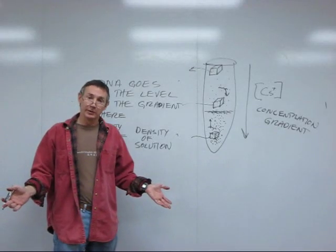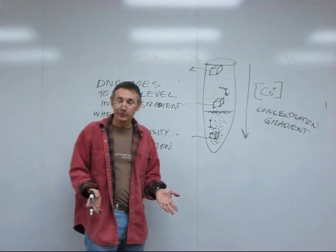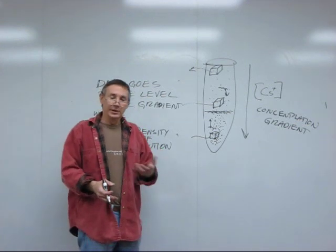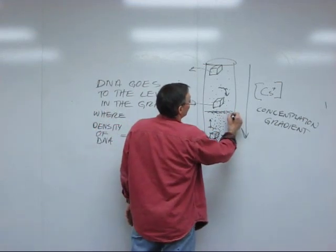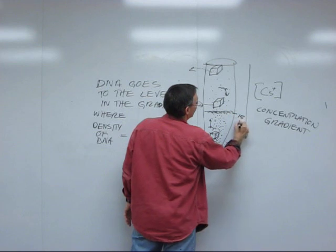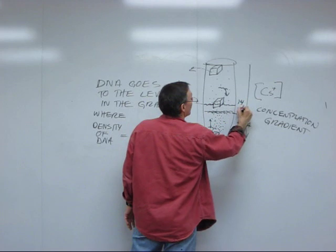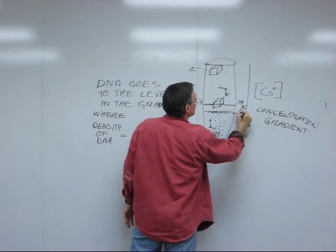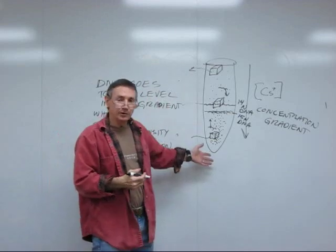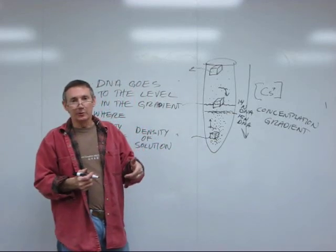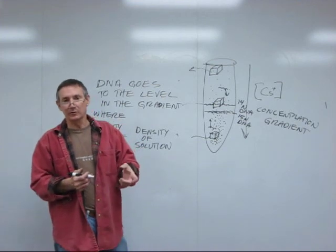If you have two different kinds of DNA in there, which Meselson and Stahl did, if you have DNA that contains nitrogen-15, it's a little bit denser. DNA that contains nitrogen-14 is a little less dense. Then the DNA containing nitrogen-15 sits here, and DNA containing nitrogen-14 would be a little bit higher. And so by using the density gradient, they were able to separate DNA molecules that differed very slightly in density and were able to test hypotheses about how DNA is replicated.